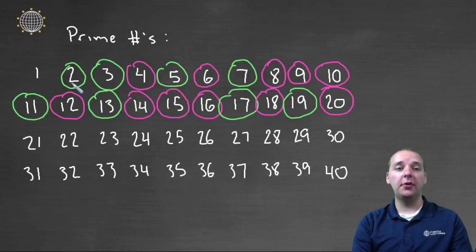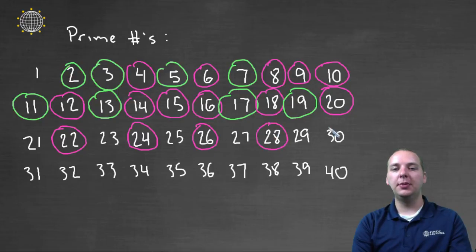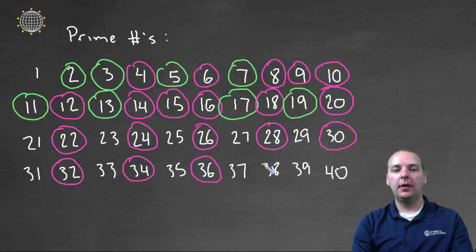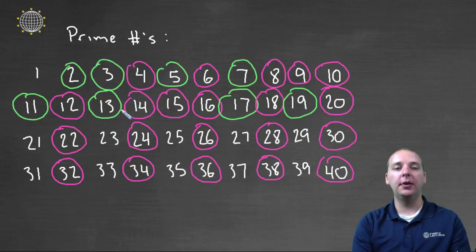All the even numbers other than two have to be composite, because they're a multiple of two at least. So I can save myself some time and let me just go ahead and circle all the even numbers just to speed things along. And let's see if there's any other shortcuts. Any multiples of three are going to be composite, other than three, because it's a multiple of three.